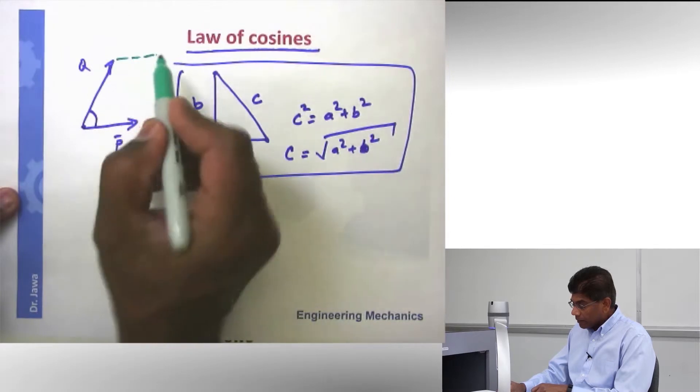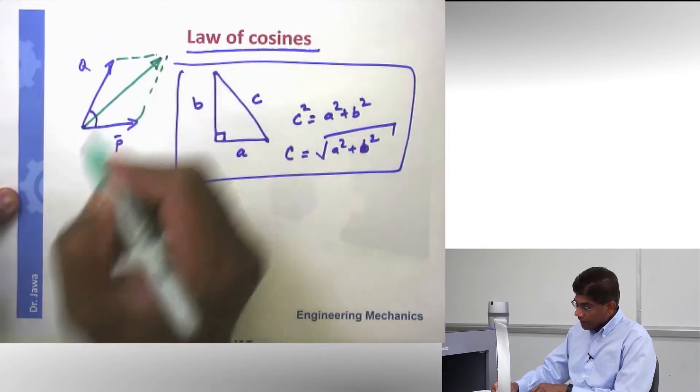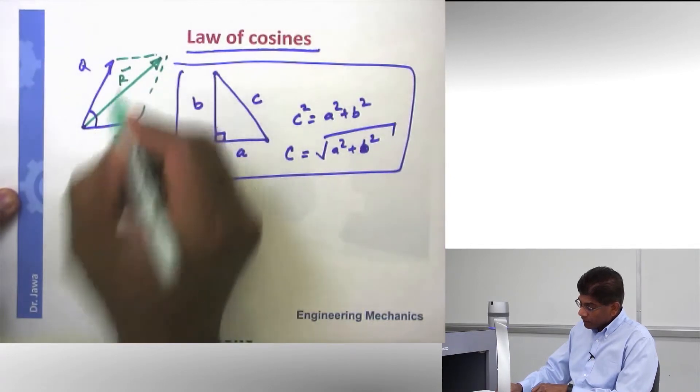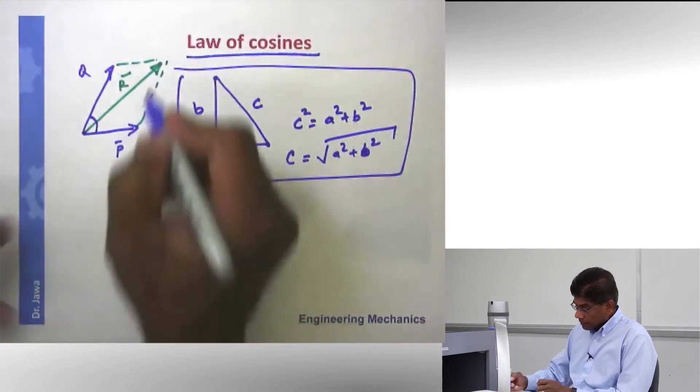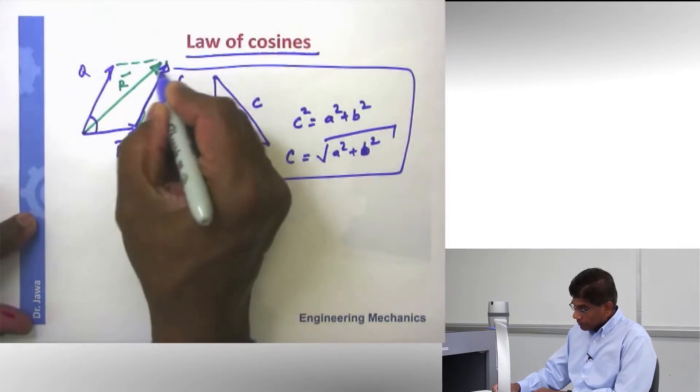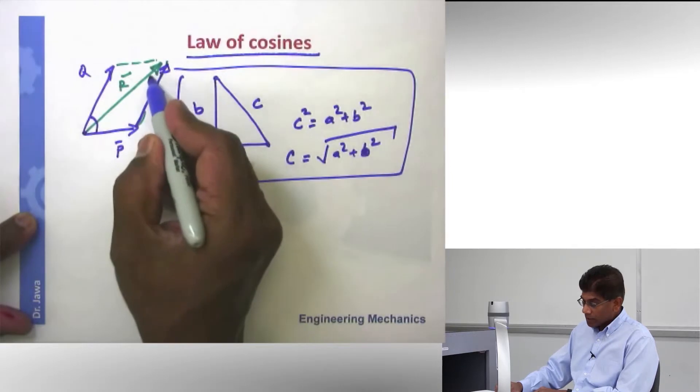But you do know we can use the triangle law to solve this problem. And effectively, your resultant is going to be looking something like this. This is my resultant vector. And if you look at it, you have three sides. This is your vector P, this is your vector Q, and this is your resultant.